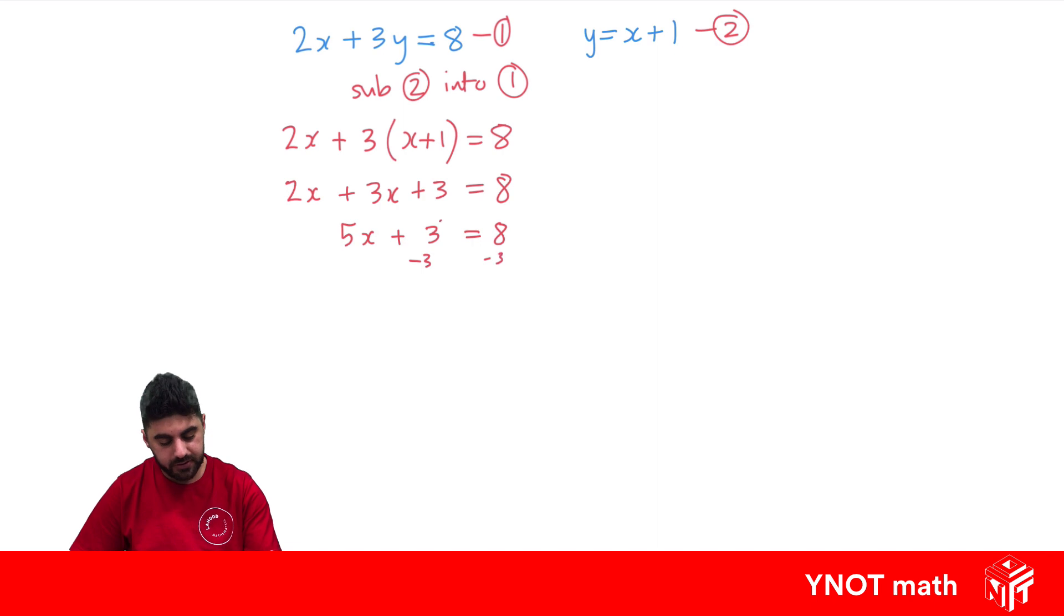Subtract 3 from both sides. So we get 5x equals 5. Divide both sides by 5. So x equals 1.